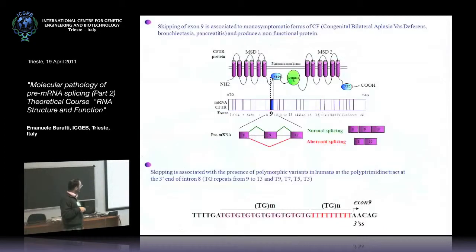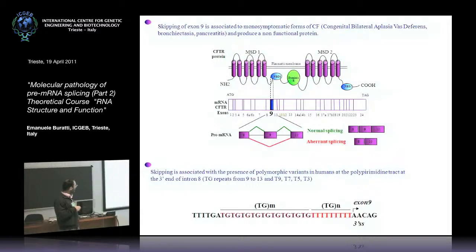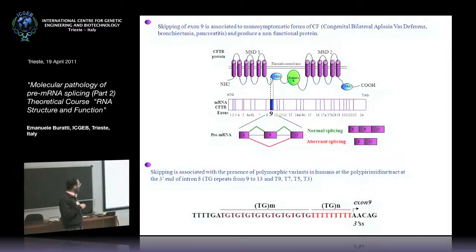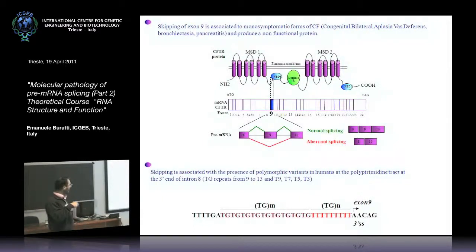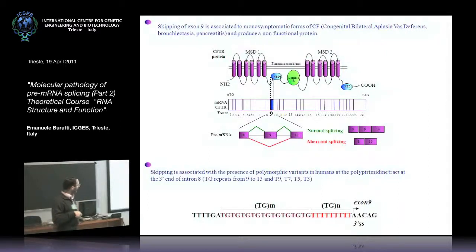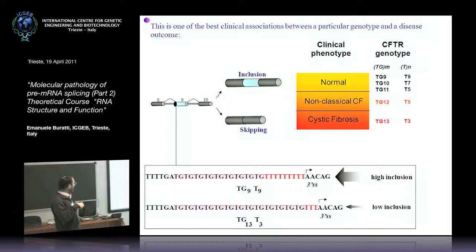At the time in our lab, we were working on CFTR exon 9 alternative splicing in humans. In humans, CFTR exon 9 is alternatively spliced, and when exon 9 is excluded from the final mRNA, people develop certain monosymptomatic fibrosis. The inclusion of this exon depends on two polymorphic repeats near the 3' splice site — a polymorphic TG motif and a certain number of Ts. Individuals with a low number of Ts and a high number of TGs tend to develop the disease.